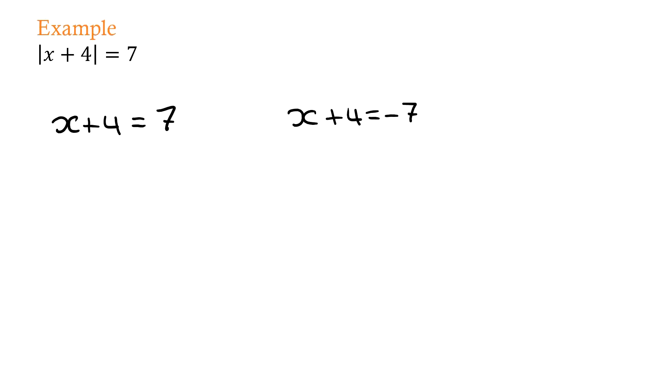So now that I've got that, I can solve it as per normal. Minus 4 on both sides for each equation, and I end up with x equals 3 and x equals negative 11.